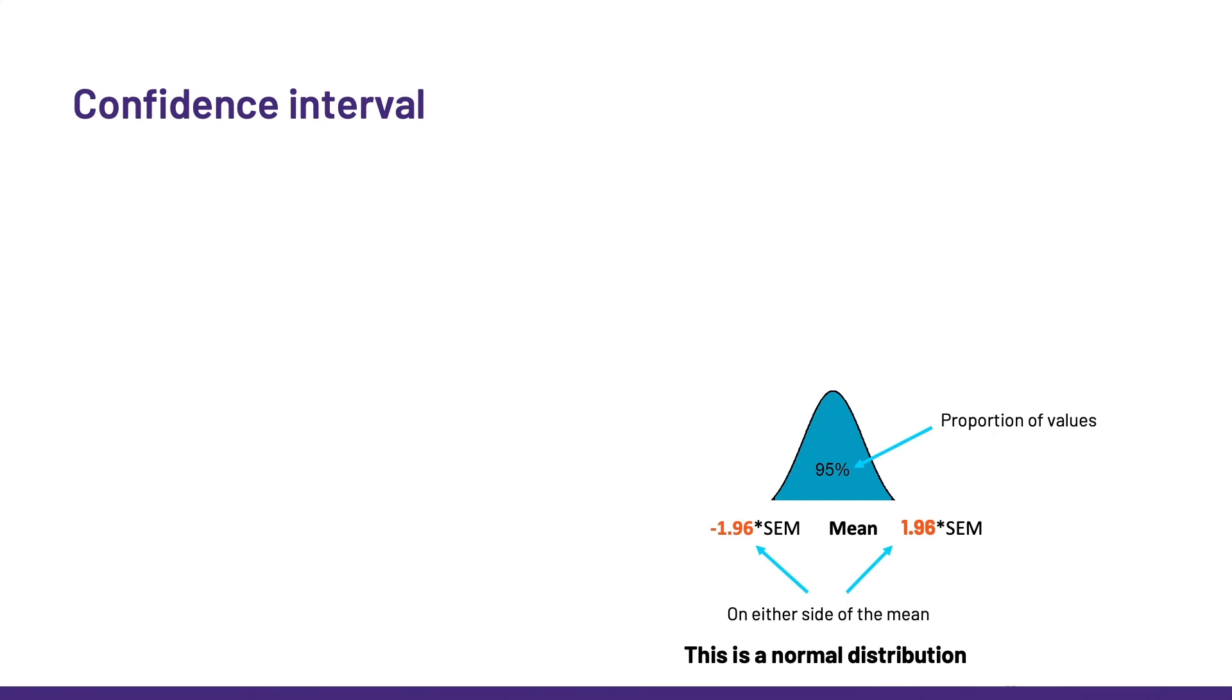And finally, we have the confidence interval, which I like very much because it is so informative. So, once again, let's consider what the expression tells us. It is an interval, so we are talking about two limits and it is about confidence. More specifically, it is a range of values that we can usually be 95% confident contains the true mean of the population.